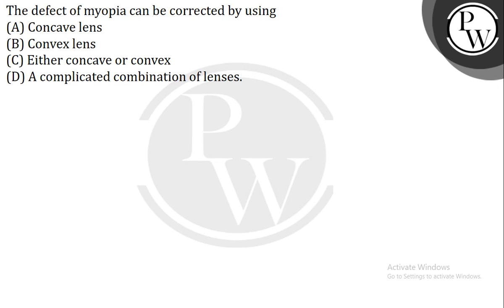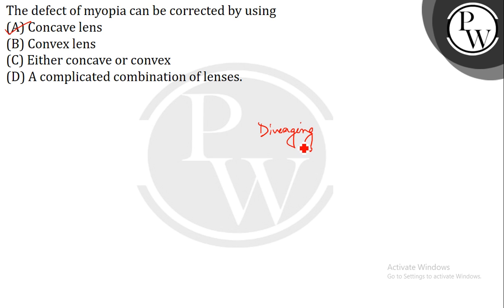Myopia can be corrected by using a concave lens of suitable power. In a myopic eye, the image is formed in front of the retina, so a diverging lens is used to shift the image back to the retina.